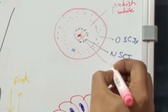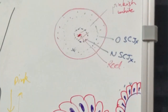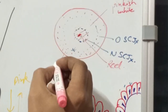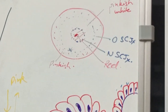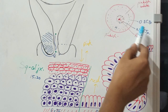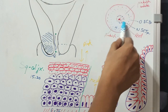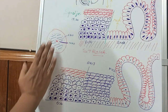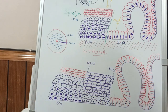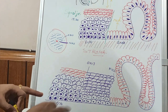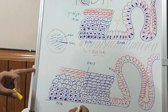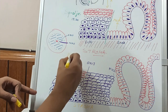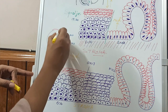The endocervical area — with its single columnar epithelium — gives a reddish appearance, as the stroma is very close to the surface. The squamous metaplasia area between the original and new squamocolumnar junction gives a pinkish-white appearance. The original stratified squamous epithelium of the ectocervix gives a pinkish appearance, with the stroma reflected through many layers. So when viewing the cervix on colposcopy, this ectocervical portion will be pink.